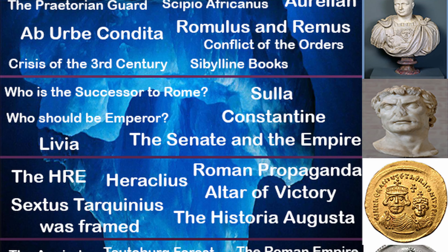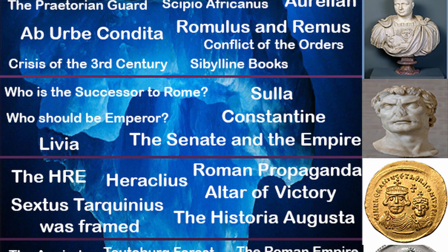We start with the fourth layer of the iceberg, represented by Sola. This layer represents some very important people, events, and questions that I think are only really known about in name, and don't tend to get focused on nearly as much as they should be.